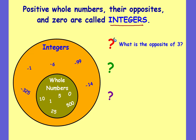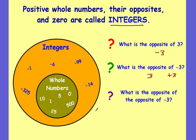Let me ask you some questions. What is the opposite of three? Well, there's no sign here, so that automatically means it's a positive three, so the opposite would be negative three. What's the opposite of negative three? The opposite of a negative is positive three, or you could just write three. What is the opposite of the opposite of negative three? The answer is negative three — the opposite of negative three is positive three, and then the opposite of that is negative three.